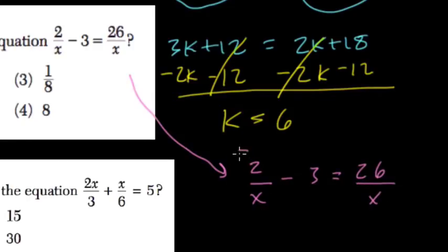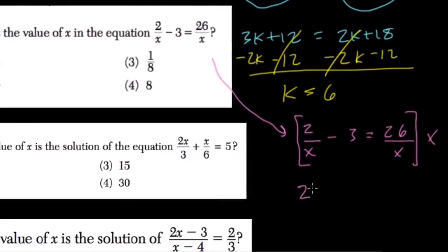Okay, so if we multiply everything by x, take a look at what happens. 2 over x times x is just 2. The x's cancel out. Minus 3 times x, 3x, equals 26 over x times x, which is 26.